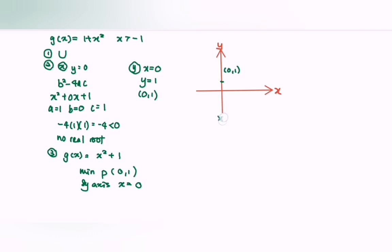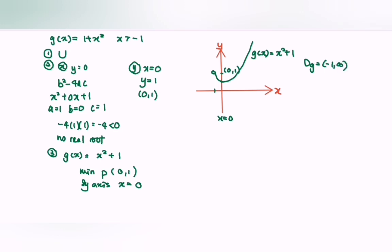The question states x is greater than negative 1. Substituting negative 1 gives the value 2, so the coordinate is at (negative 1, 2). The graph of g(x) = x squared plus 1 is sketched accordingly. The domain for g is from negative 1 until infinity, where negative 1 is not included. The range for g refers to the value of y — the lowest value is 1 — so the range is from 1 until infinity.